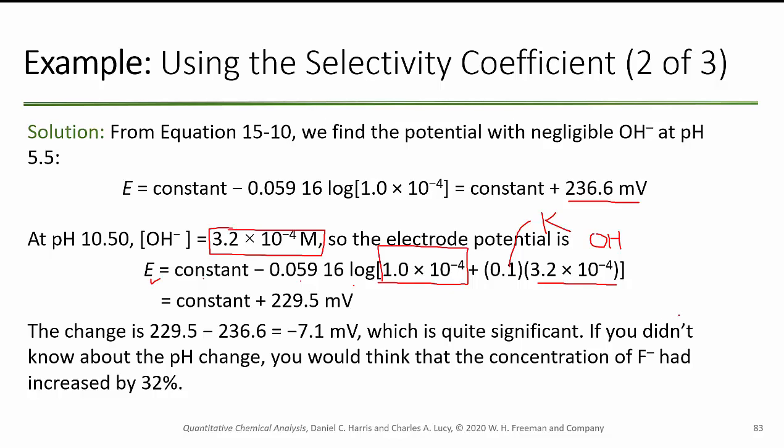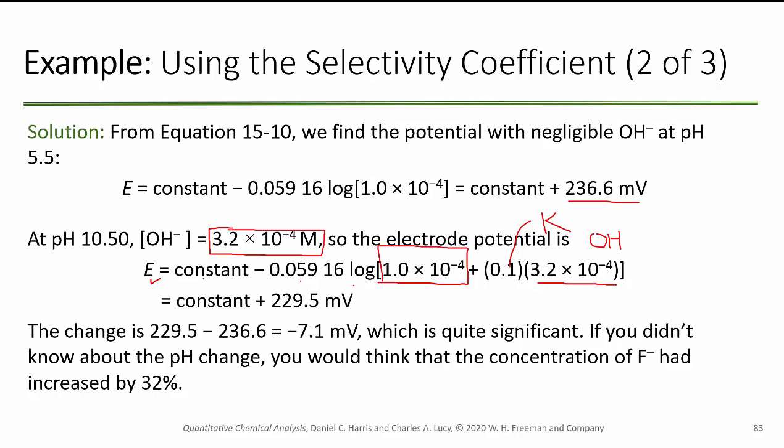That change of minus 7.1 millivolts is within two orders of magnitude. If you didn't know about the pH change, you wouldn't think that the concentration of fluoride had increased by 32% — it's a pretty big change for a small amount. Test yourself: find the change in potential when 1×10⁻⁴ M fluoride at pH 5 is raised to pH 9.5.